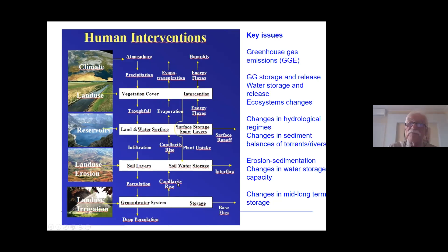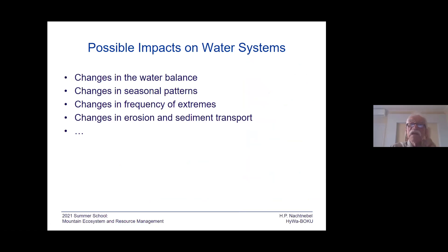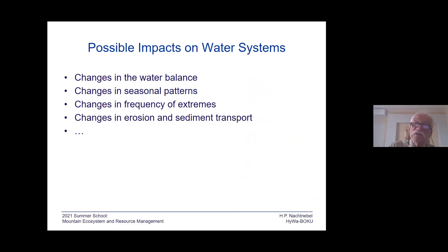Water abstraction from groundwater also modifies the cycle. So, it's on one side climate, and on the other side human interventions. We have impacts with respect to the water balance, changes in the seasonal pattern, in the frequency of extremes, and also impacts on the soil due to erosion and sediment transport. This is not an exhaustive list — there are far more impacts on water systems.